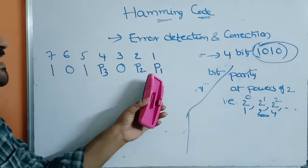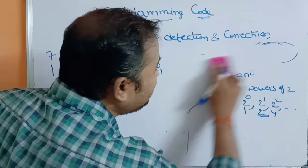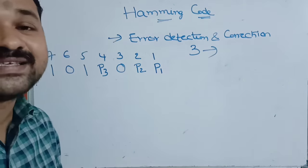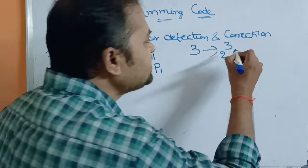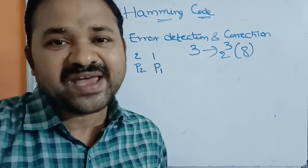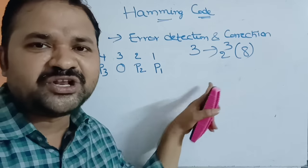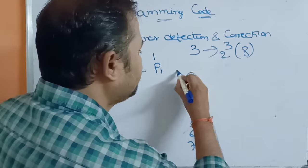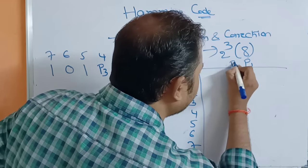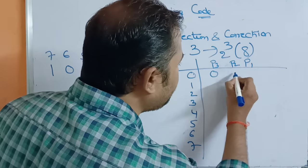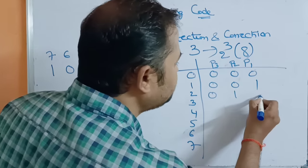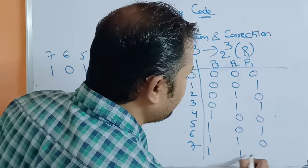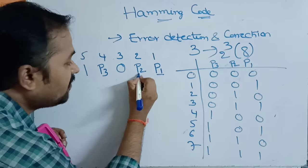Now we need to determine the values of P1, P2, and P3. We use even parity, meaning the number of 1s should be even. To find each parity bit, we look at which positions have a 1 in the corresponding parity bit column. For P1, we check positions 1, 3, 5, 7. For P2, we check positions 2, 3, 6, 7. For P3, we check positions 4, 5, 6, 7.